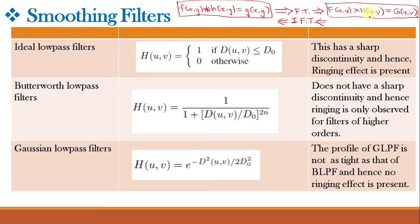So remember: convolution in the spatial domain becomes multiplication in the frequency domain. For filtering we use the formula G(u,v) = F(u,v) × H(u,v). Our objective is to choose H(u,v) so that we get a low pass filter. In all the different types of low pass filters, it is only H(u,v) — our filter mask — that is changing.